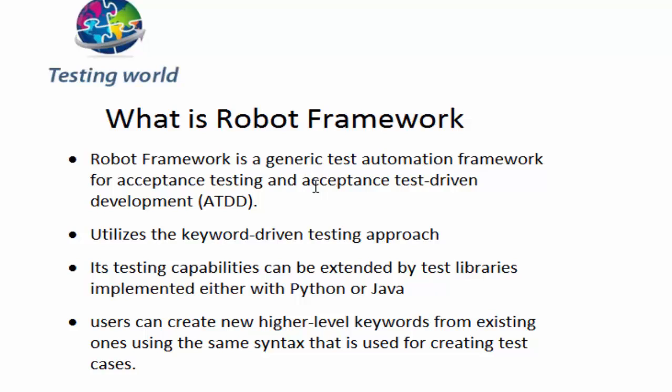We can also use Robot Framework for acceptance test driven development. In that case, the BA or client first uses Robot Framework to write all the test cases — called acceptance test cases — without any programming knowledge, using only keywords. On the basis of these test cases, the developer writes the code. During unit testing, the developer executes these acceptance test cases, and if they pass, it means the code is correct.